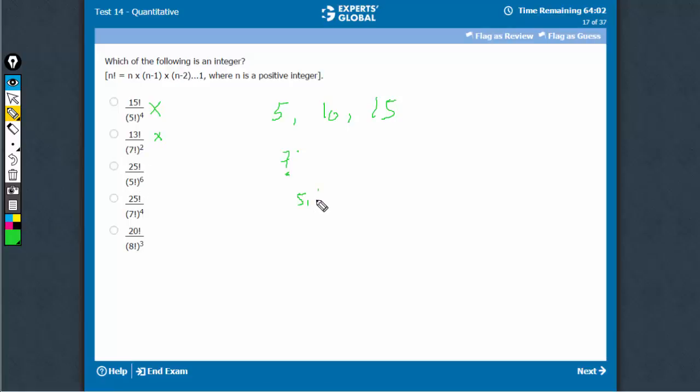25 factorial: 5, 10, 15, 20, they have one 5 each. 25 has two 5s, so 4 plus 2, 6 5s. This is going to be an answer.